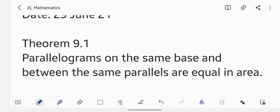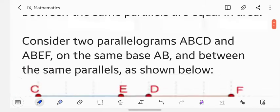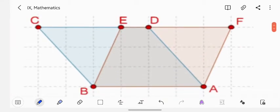First of all, we'll see how the diagram looks for this particular theorem. We have the parallelogram here ABEF and ABCD which is on the same base AB. If you look closer, the base is same which is AB and between the same parallels CF.